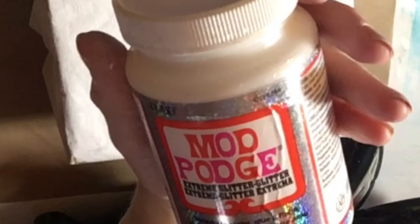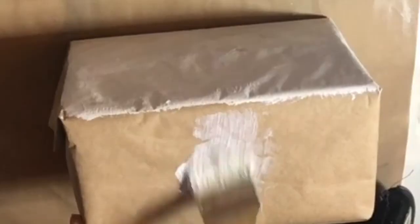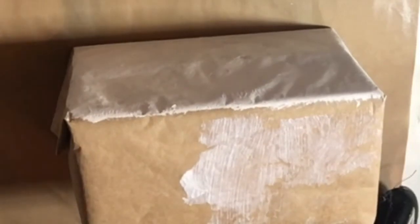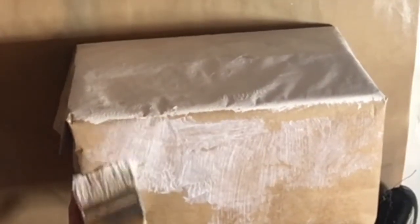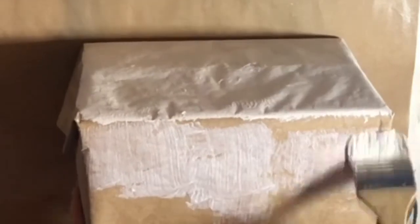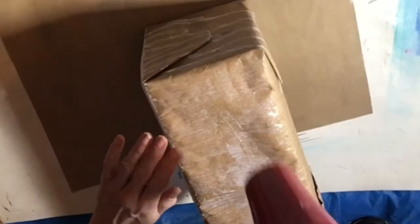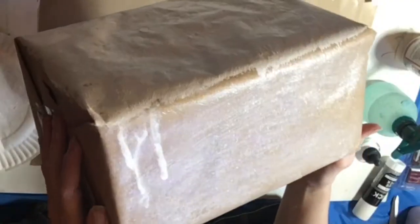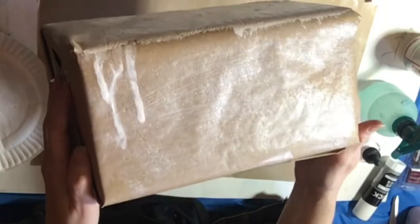Now I'm using Extreme Glitter Modge Podge. And I'm using this as a sealer layer. And it could be matte if that's what you prefer. But yeah, I needed that so that the paint drips don't soak into the paper.